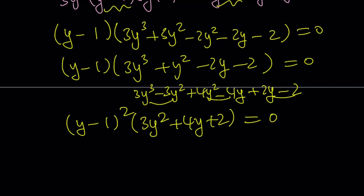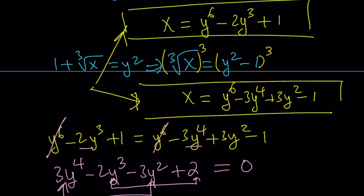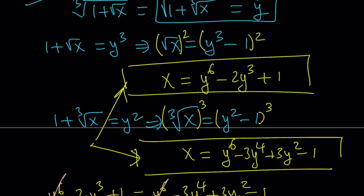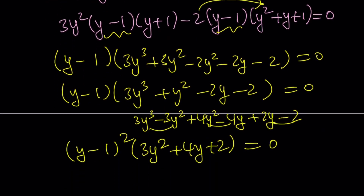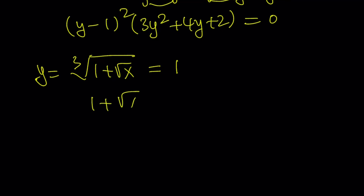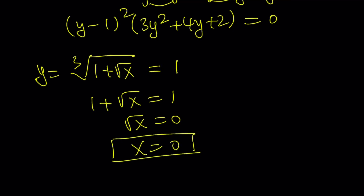y equals 1 is a valid solution. But remember, we're looking for x, not y. Since y equals 1, let's plug it into the cube root expression: the cube root of 1 plus square root of x equals 1. Cubing both sides gives 1 plus square root of x equals 1, which means square root of x equals 0, which means x equals 0. Checking with the square root equation gives the same answer, so x equals 0 is a valid solution.